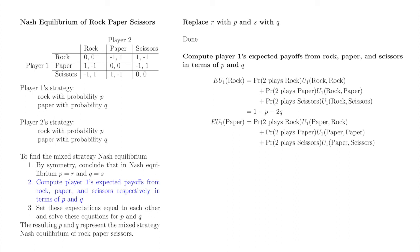We repeat this task to compute EU1 of paper. The probability that player 2 plays rock is p, and when that outcome occurs player 1 receives 1. The probability that player 2 plays paper is q, and when that outcome occurs player 1 receives 0. The probability that player 2 plays scissors is 1 minus p minus q, and when that outcome occurs player 1 receives minus 1. EU1 of paper equals minus 1 plus 2p plus q.